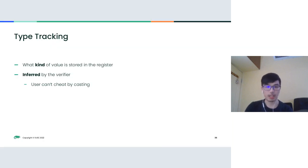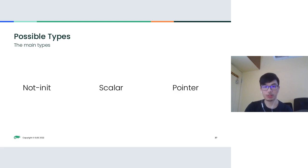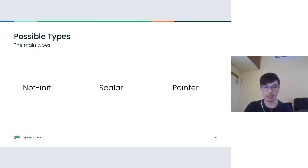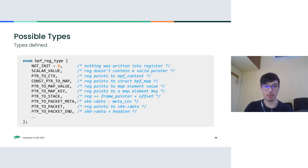Type tracking, as the name implies, tracks what kind of value is stored in a register. This information is inferred by the BPF verifier from the instructions, so users cannot interfere or cheat. There are three main types used by the verifier: NOT_INIT, meaning the register is not initialized; scalar, which is basically a plain number — anything that's not a pointer; and pointer. The pointer type is actually quite fine-grained; there are many pointer types which help the verifier track various things.